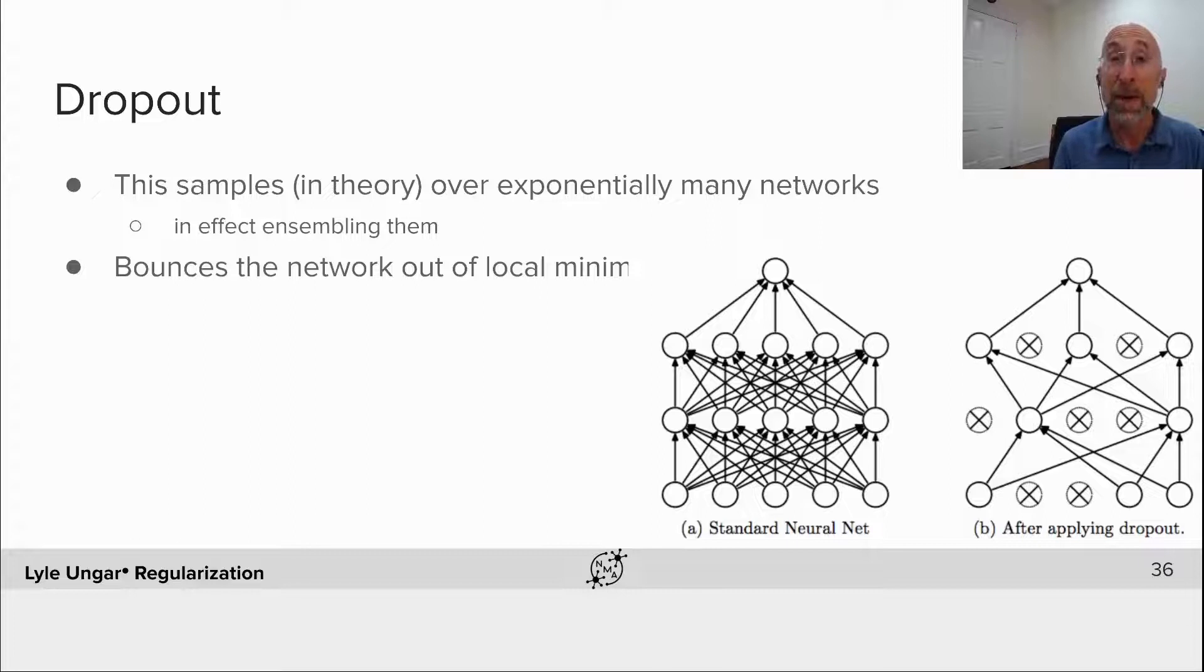But doing the dropout bounces out of these different pieces. It samples the networks, it avoids local minima, it avoids converging to tight minima, and in practice works extremely well. It's widely used.